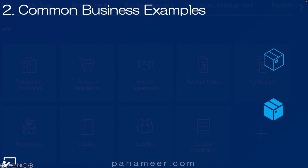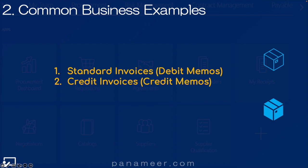Slide two: common business examples. There are two examples of invoices that get imported. First, the standard invoice, also called a debit memo. Second, there's what we call a credit memo — a reversing invoice or a credit. Both get imported, particularly if they're coming through OBN. Click the link above to watch a quick video explaining the invoices application if you want more information.